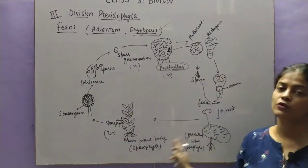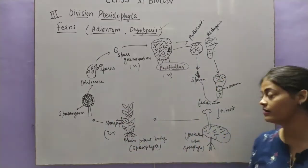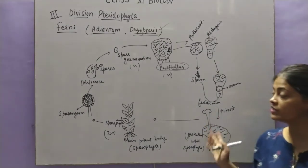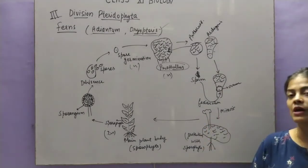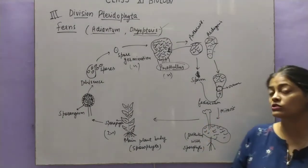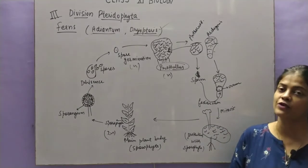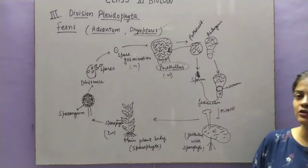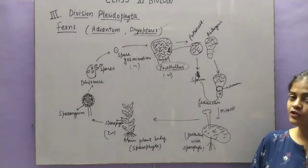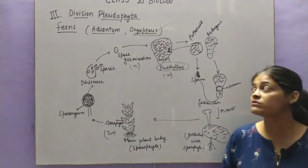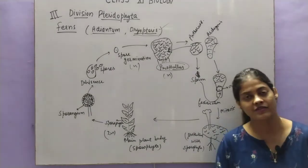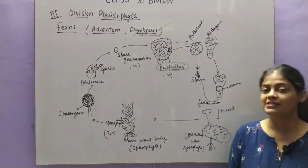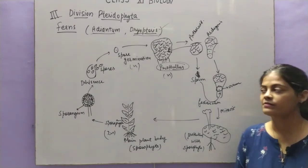So this cycle continues. This is the life cycle of pteridophytes, in which different stages show the evolutionary relationship with bryophytes. The movement of sperm inside the archegonia — I will show you in the life cycle of gymnosperms, which is the next division in the plant kingdom. So let's see the next division, that is gymnosperms.